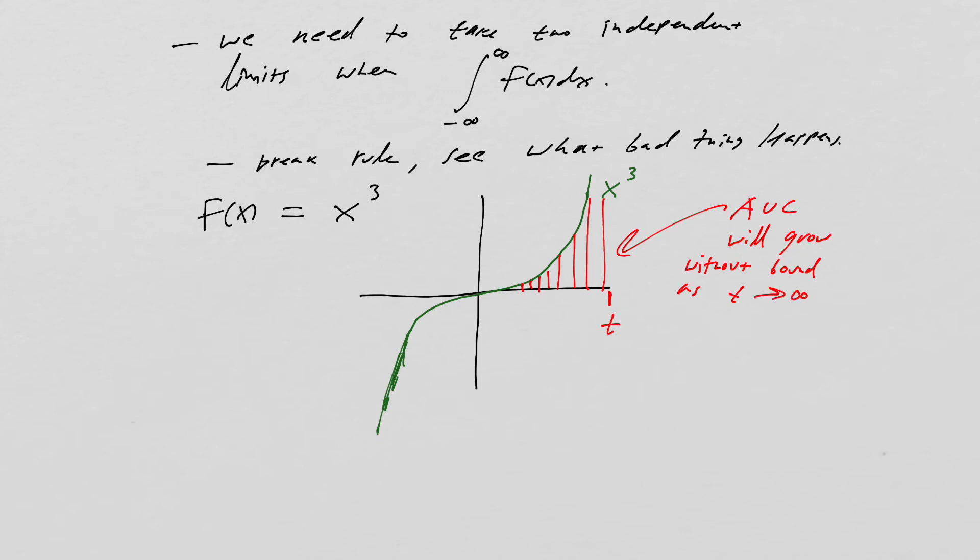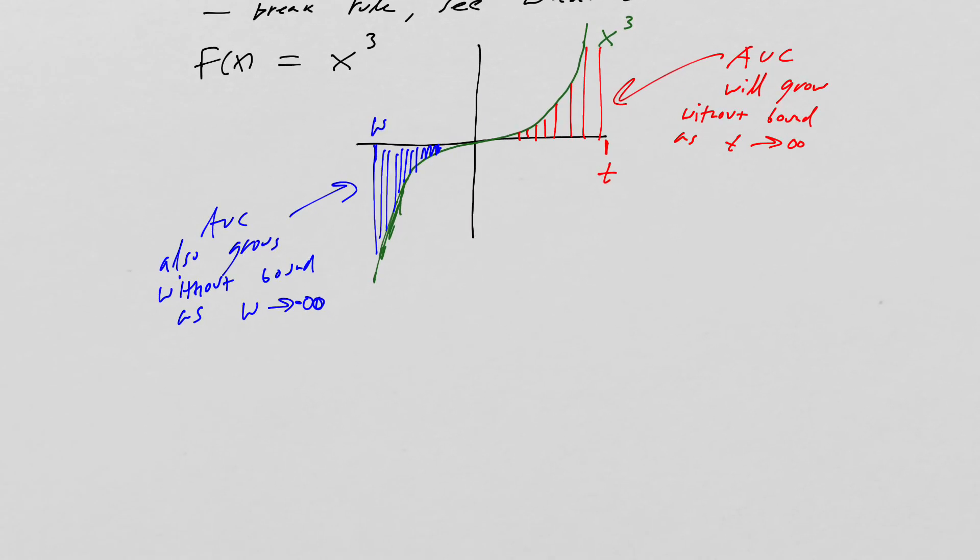As t, if I take that to be my t, goes to infinity, right? Likewise, if I look over here, and I take that to be w, we see the area under the curve also grows without bound as w goes to negative infinity.